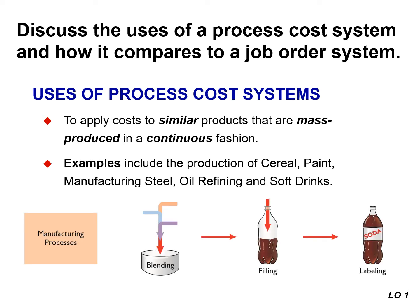Once production begins, it continues until the product emerges. The processing is the same for the entire run. Each unit obtains the same amount of materials, labor, and overhead. All units produced are identical — for example, each bottle of soda is the same.